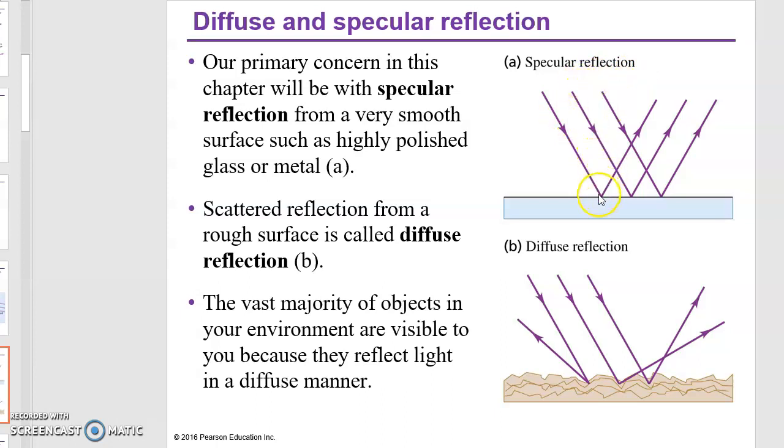This is called a specular reflection or mirror reflection. One of the things we go over a lot in the book is something called a normal line. A normal line is perpendicular to the surface right here. If you have light coming in at a certain angle and you measure that angle with respect to this normal line, you'll discover that's the angle of incidence.